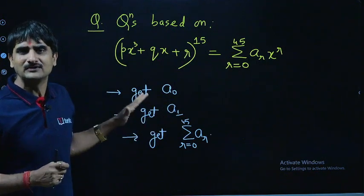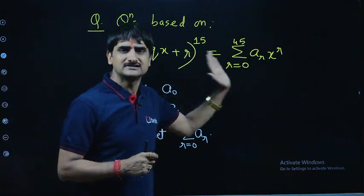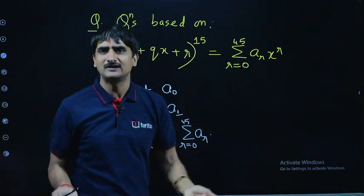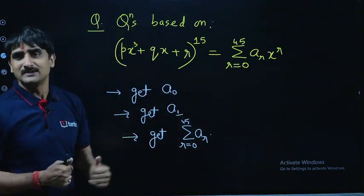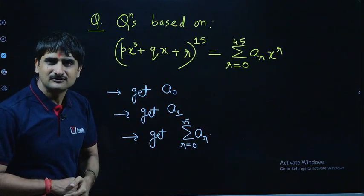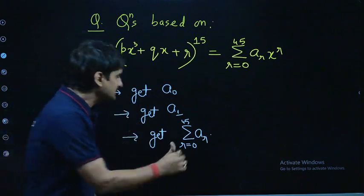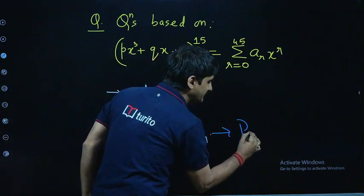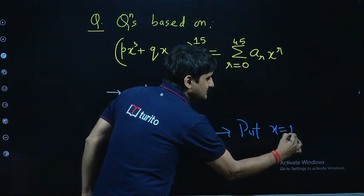We just use that this is an identity statement which is true for all x. It's an identity statement which is true for all x, and then we get these values of a₀, a₁, and sum of all the coefficients. Again, extremely important. For this, at least I will say whatever variable here is put, that one you will get.